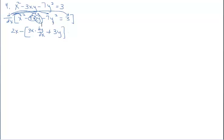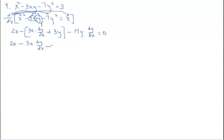Moving on to the next term, that derivative is minus 14y times dy/dx, and then we have equals 0. Notice we have two terms with dy/dx in it, so we're going to have to isolate those and move all the other terms to the other side. But first I need to do the necessary algebra here and distribute this negative.